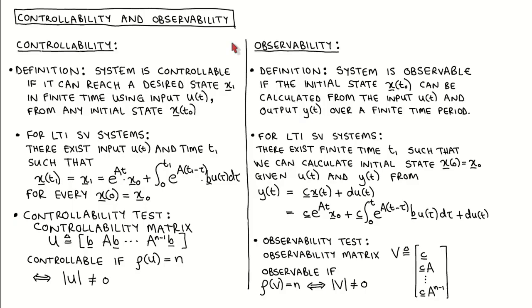If we want to design full state feedback, which is part of the state variable compensator, the plant must be controllable. The definition of controllability states that a system is completely controllable if it is possible to find an unconstrained input u that would cause the system to reach some desired state x1 from any initial state in a finite time period. Informally, this means that we can use the input to change the states to anything we want.